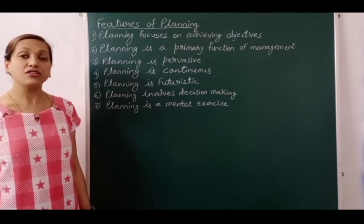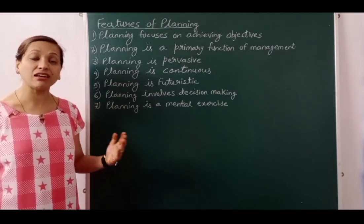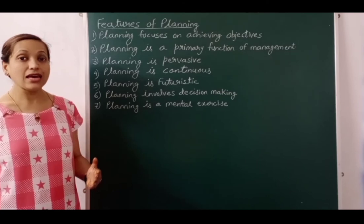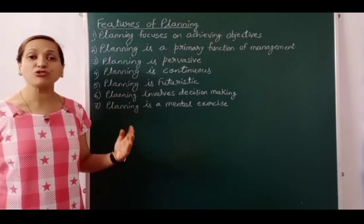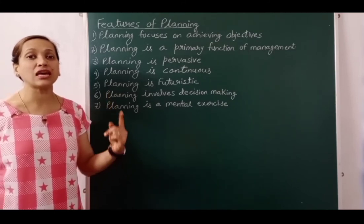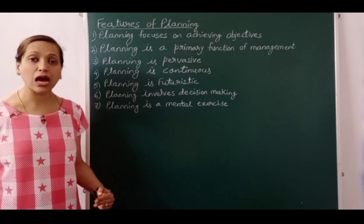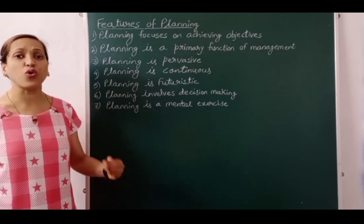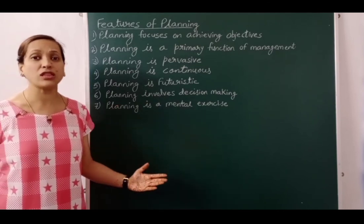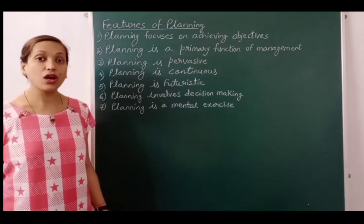The sixth feature is: planning involves decision making. Decision making plays an important role in drafting plans. Where two or more options are available to achieve the objective, the first decision to be made is which is the best suitable option. For example, if you need to fill a high post, two options are available — promote someone internally, or advertise and appoint a new candidate. However, where only one option is available, decision making is not needed and hence planning is also not needed.